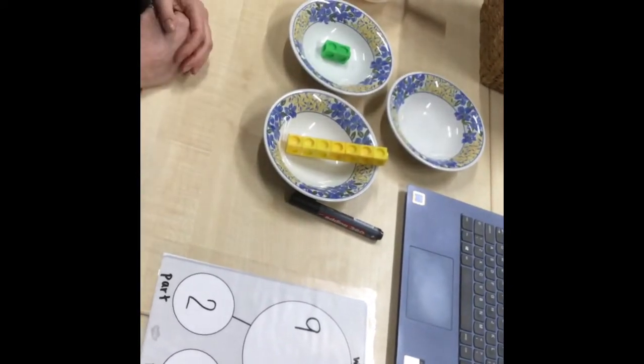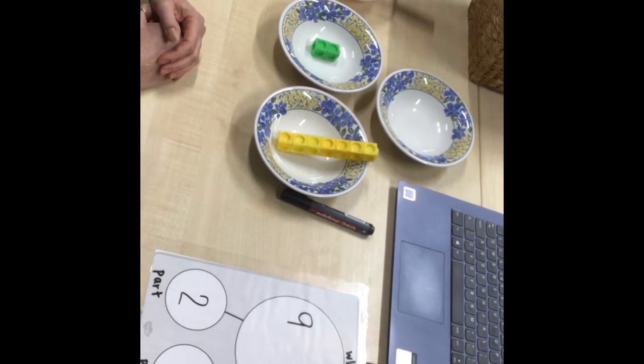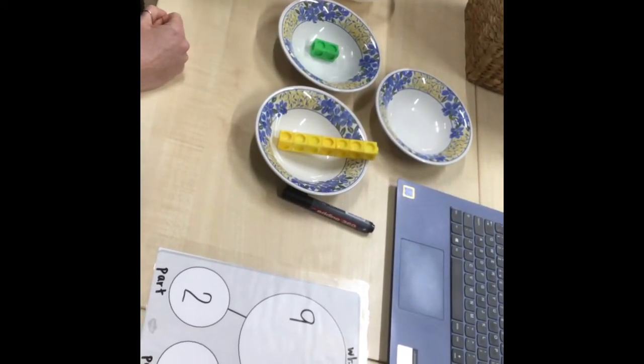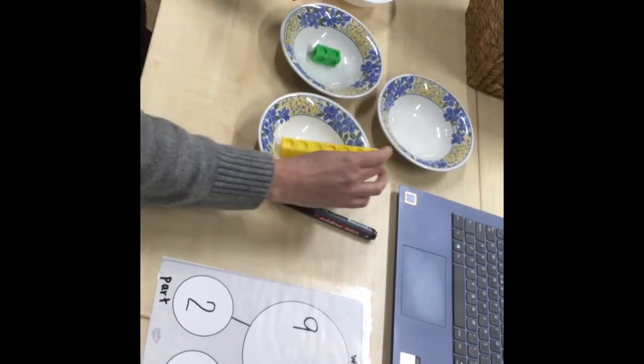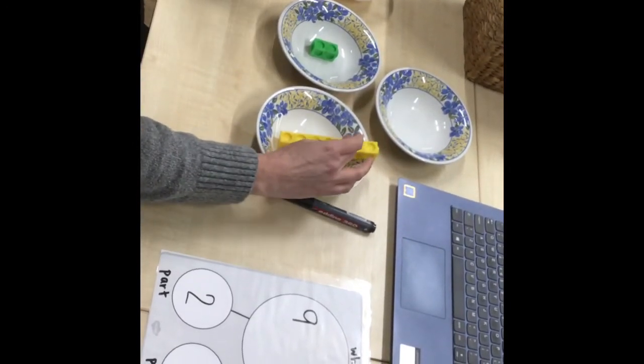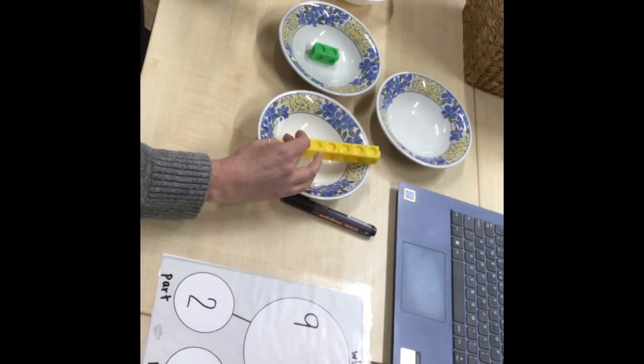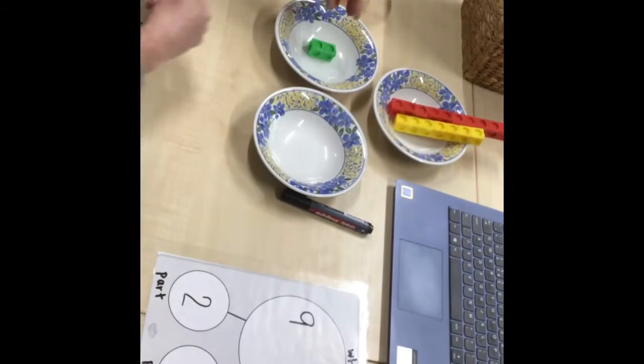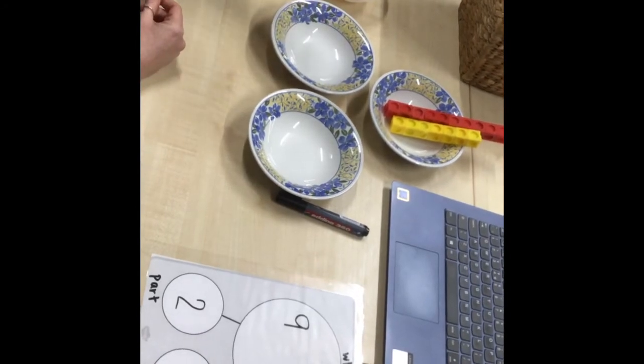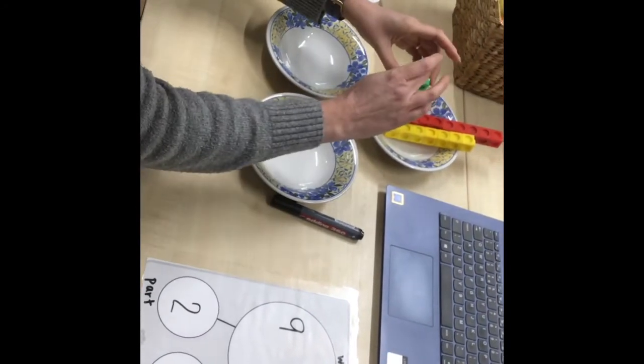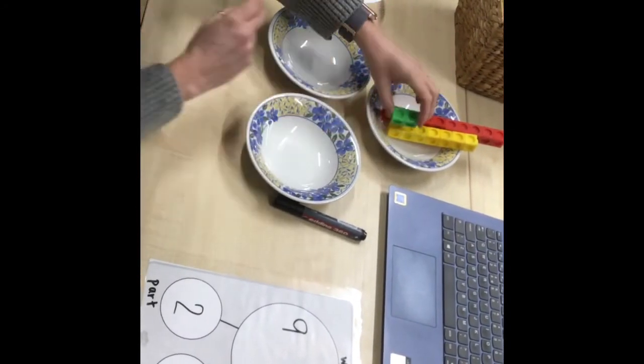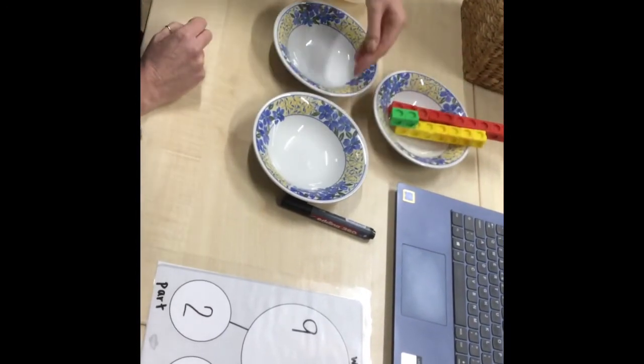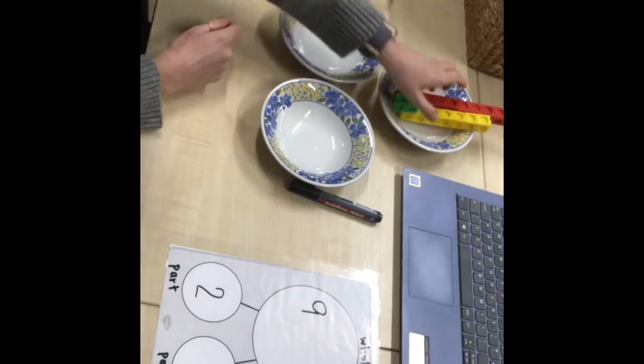Eleven, twelve, thirteen, fourteen, fifteen, sixteen, seventeen. So I've got 17 there, and then I'm going to add two more: seventeen, eighteen, nineteen. So I know now my whole number is 19.